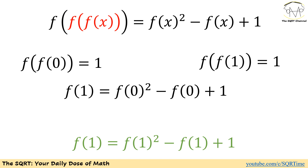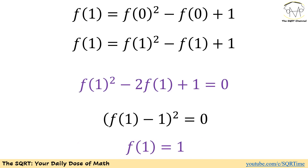In this green equation we only have f of 1 and nothing else, so we can find f of 1 easily. Simplifying, we get f of 1 squared minus 2 times f of 1 plus 1 equals 0, and we can say that f of 1 is basically 1.